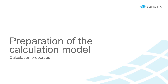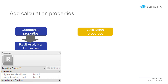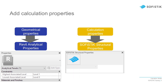For the moment, we have only talked about the geometry of the calculation model. To make it a fully pledged calculation model, we also need to add several calculation properties. The geometrical properties are linked to the native Revit analytical model and its properties, while calculation properties will be defined via the Sophistic Structural Property menu.